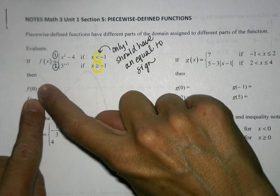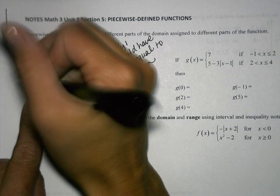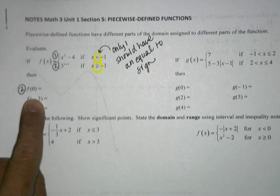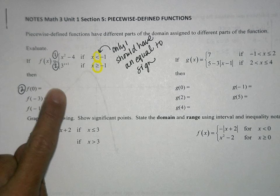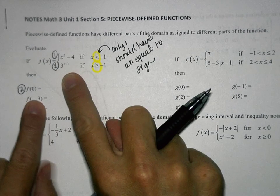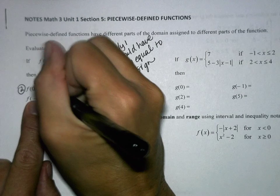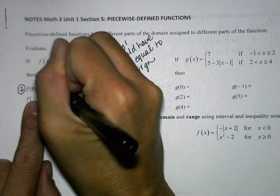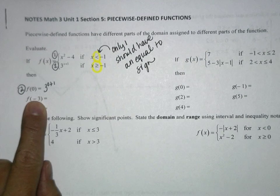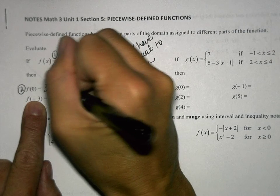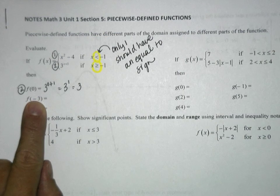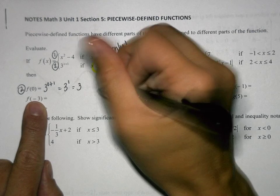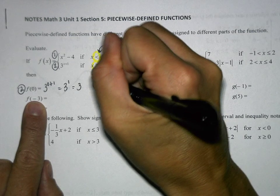When you're finding f of 0, we are going to use the second equation. We're going to plug in 0 into this equation for x. So we have 3 to the 0 plus 1, which makes 3 to the first, which equals 3. So the value for f of 0 is 3.